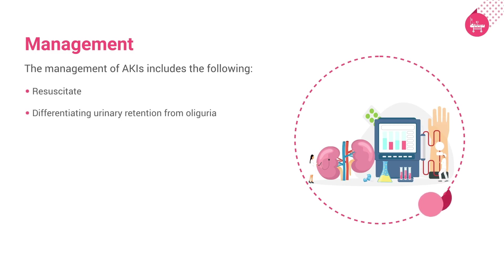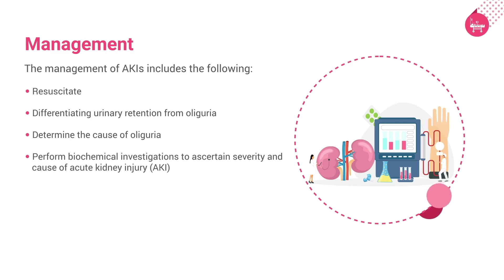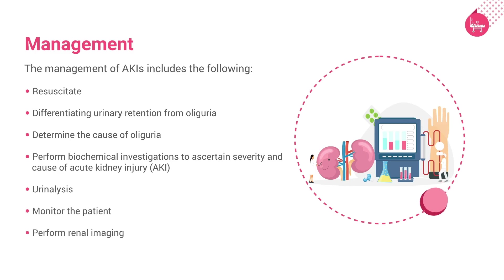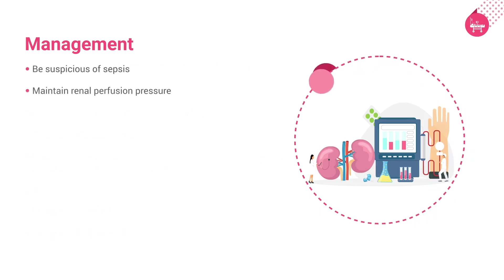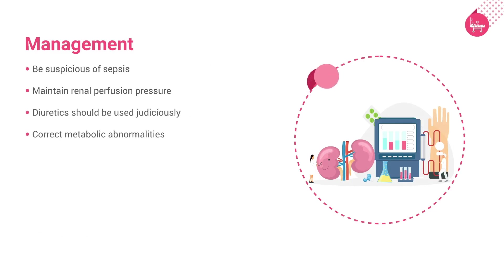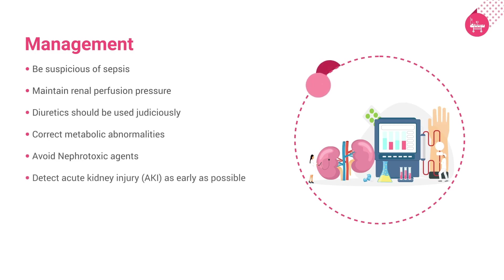Resuscitate; differentiate urinary retention from oliguria; determine the cause of oliguria; perform biochemical investigations to ascertain severity and cause of acute kidney injury (AKI); urinalysis; monitor the patient; perform renal imaging; be suspicious of sepsis; maintain renal perfusion pressure; use diuretics judiciously; correct metabolic abnormalities; avoid nephrotoxic agents; detect acute kidney injury or AKI as early as possible.